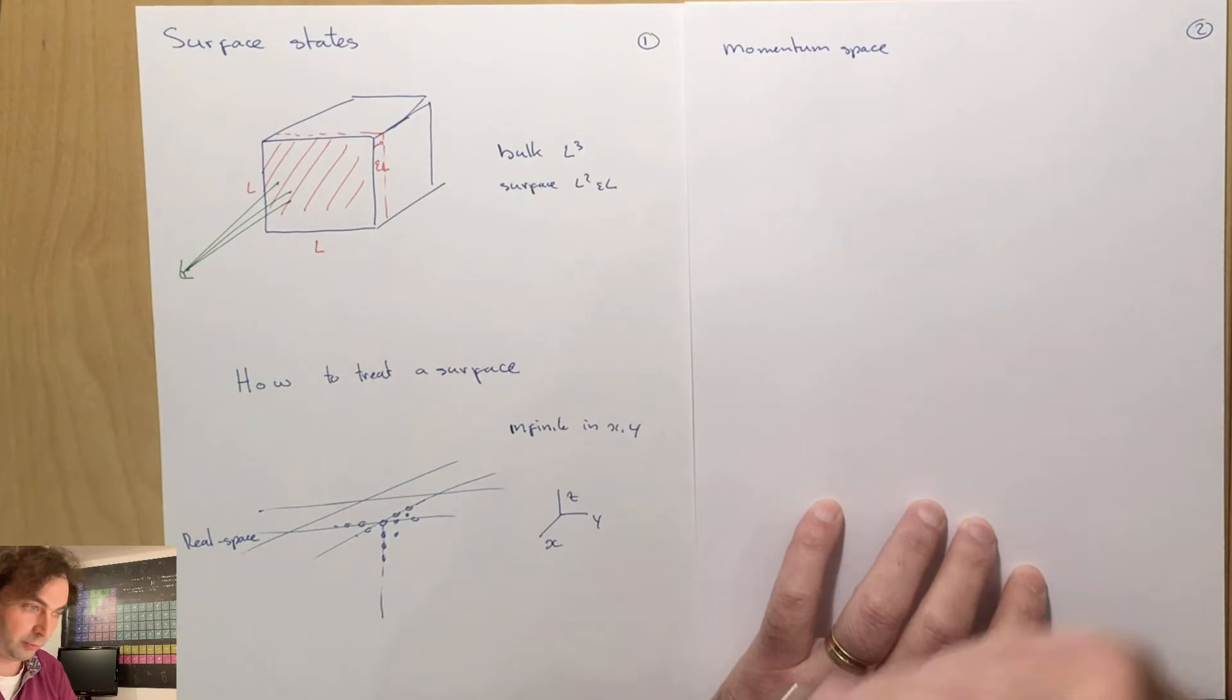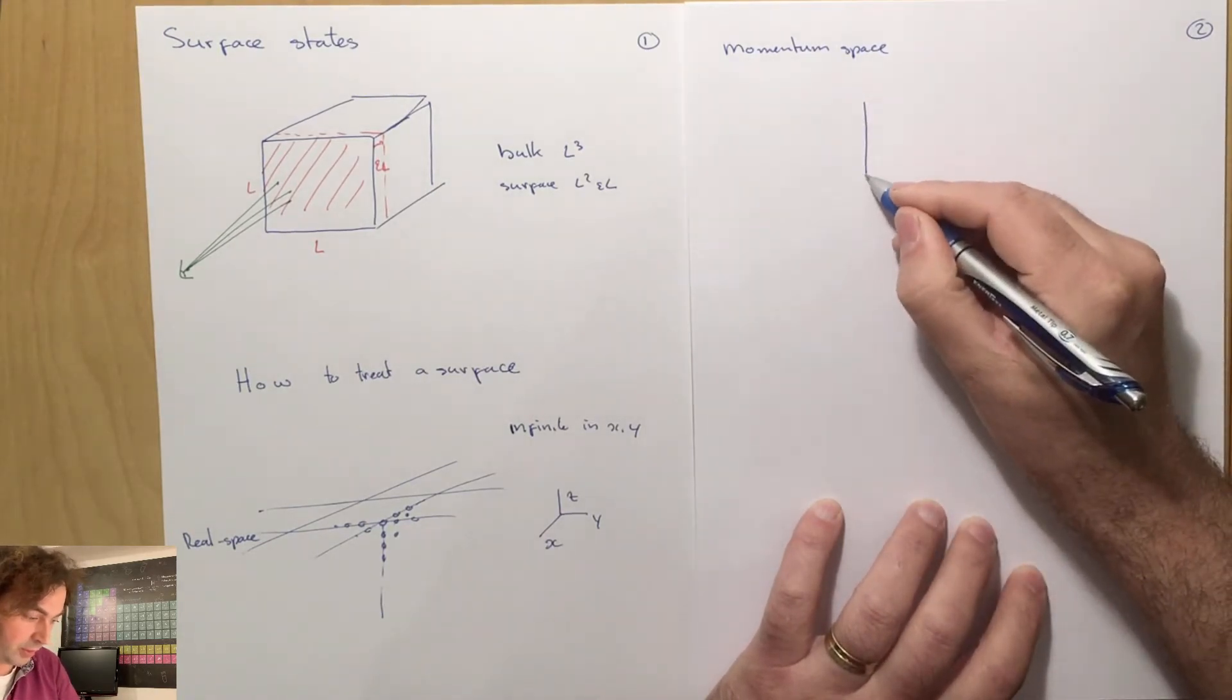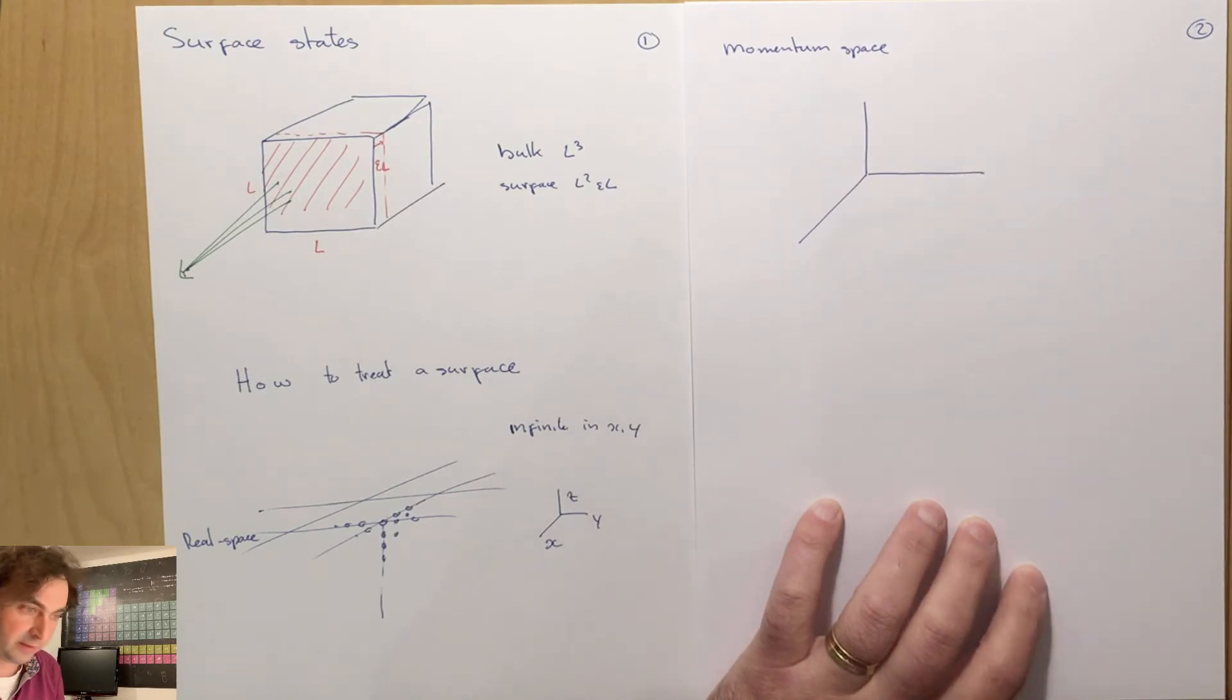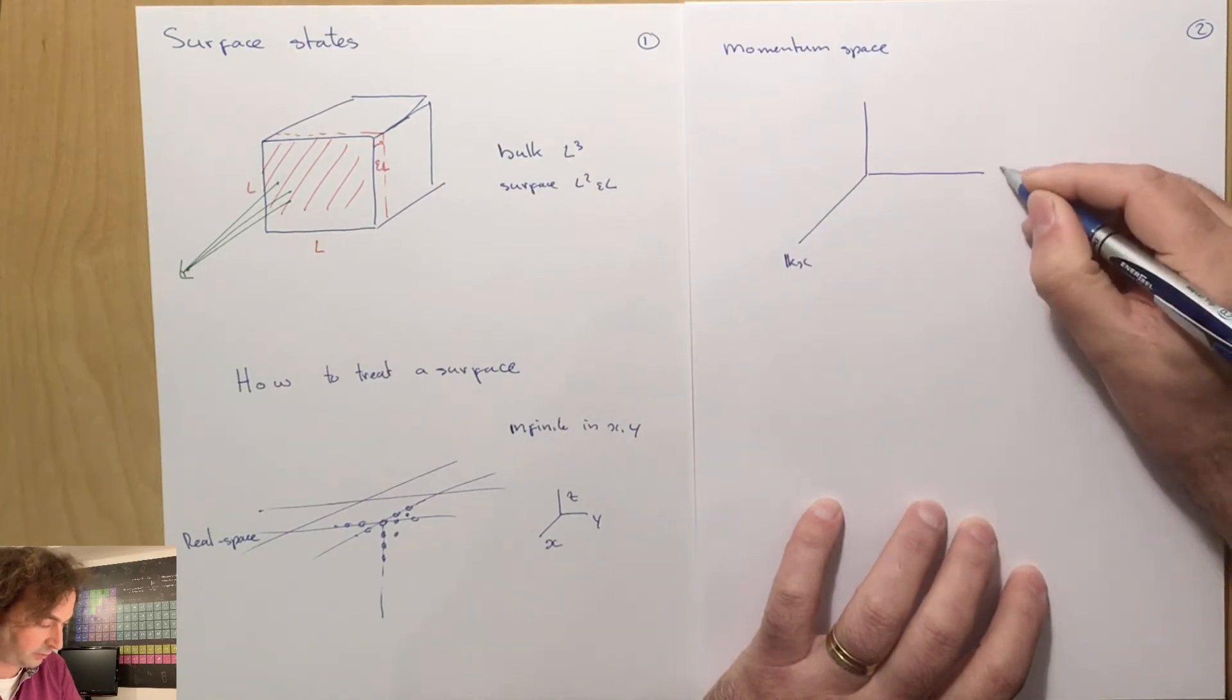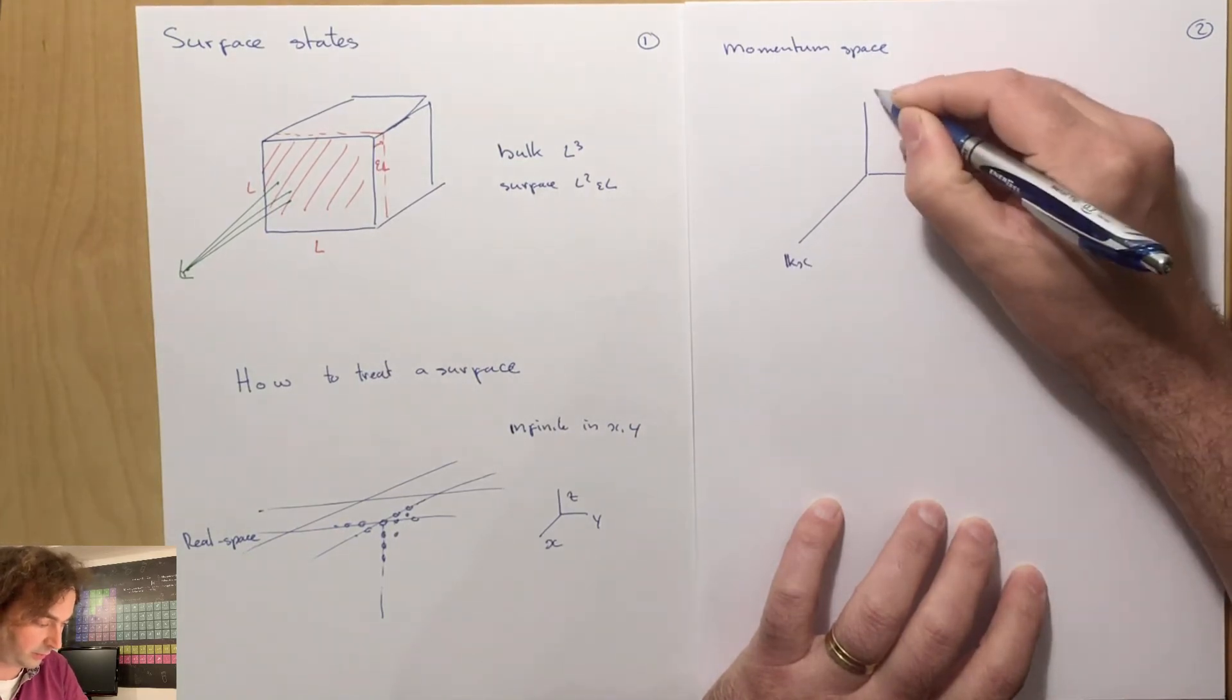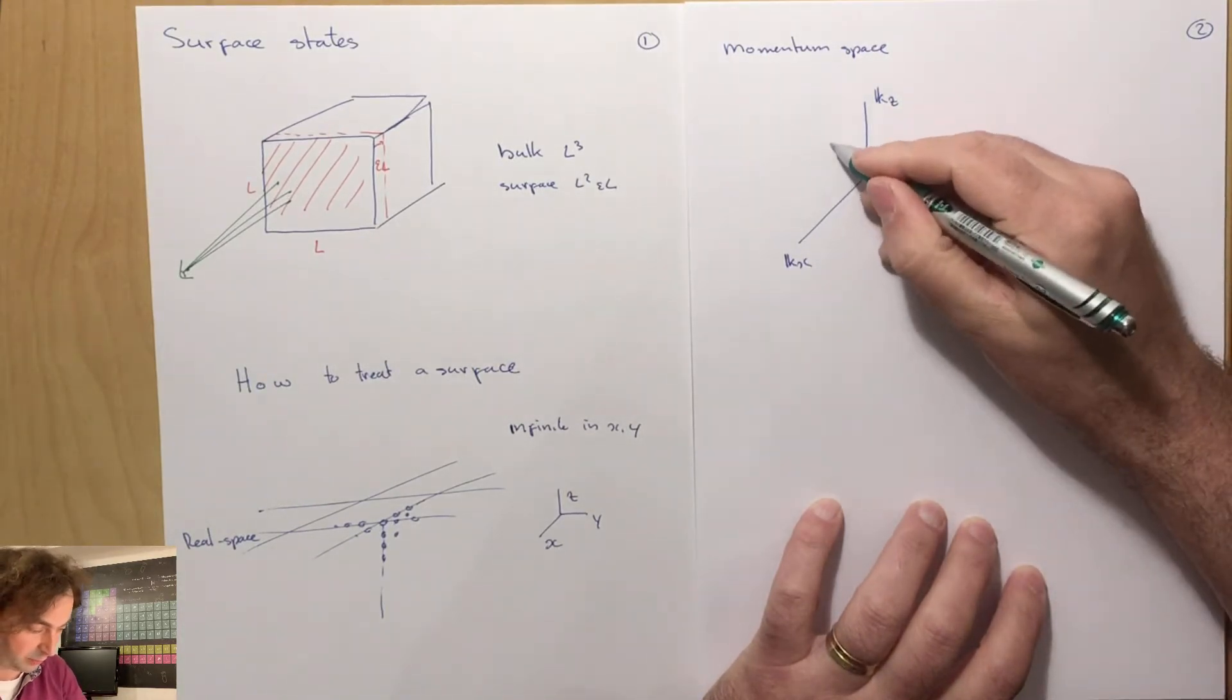If we look in momentum space, then we can first of all look at the bulk Brillouin zone. Just for simplicity, we take a cubic lattice. We have our crystal momentum kx, ky, and kz, and within that we have our Brillouin zone.